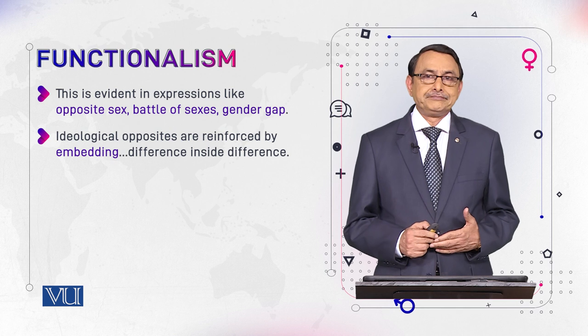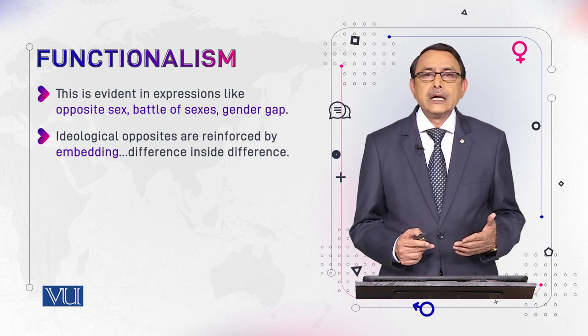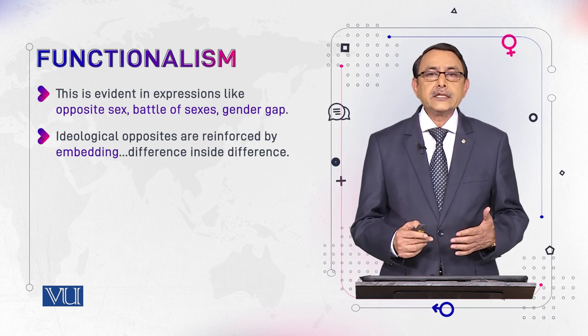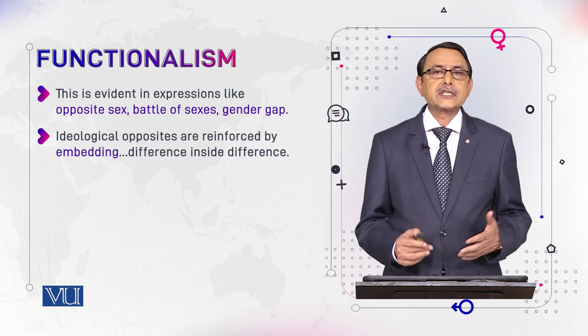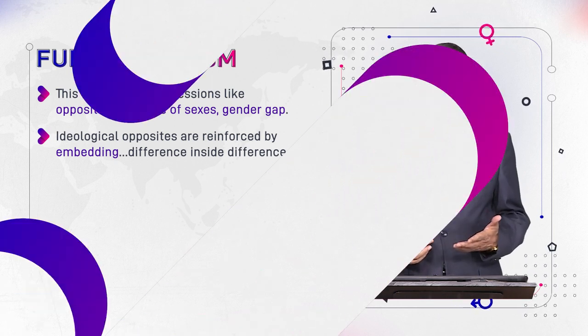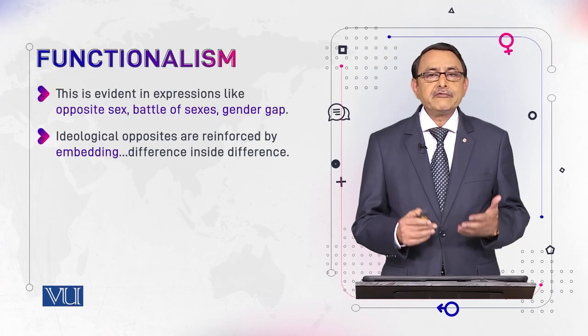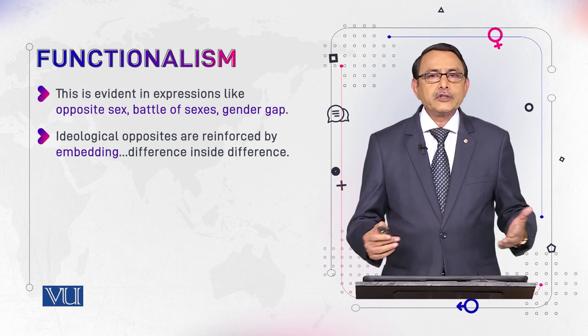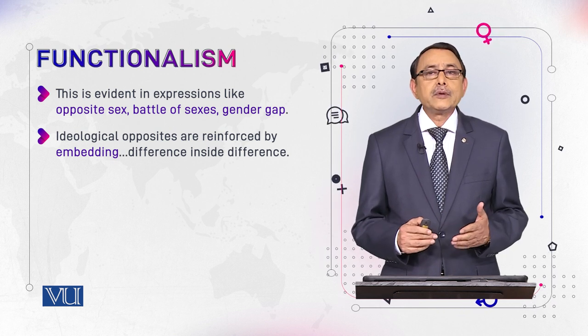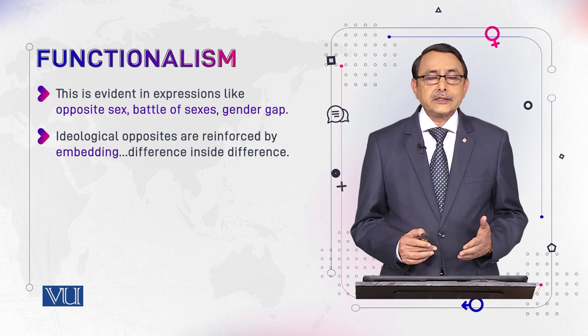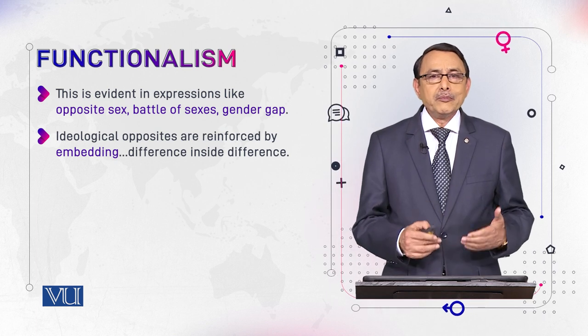Oppositions are reinforced through embedding — embedding means when one thing lies inside another. To further reinforce the oppositions between sexes in gender ideology, another thing is done: not only are men and women kept poles apart, but within the category of men, men are compared with other men, and women are compared with other women, again on certain oppositions.